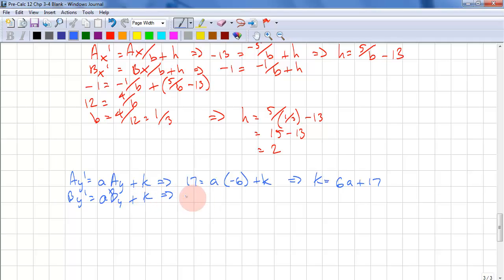So we have -7 = a times 6 + k. Now we substitute k into here. So we get -7 = 6a + 6a + 17. So -24 = 12a. And a = -2.